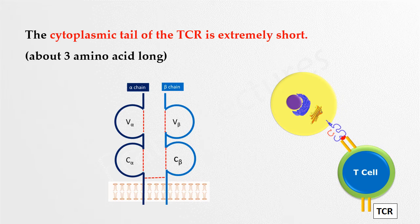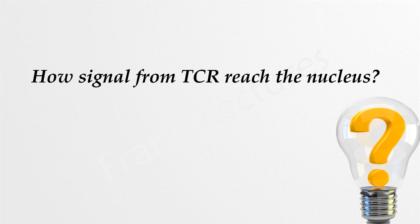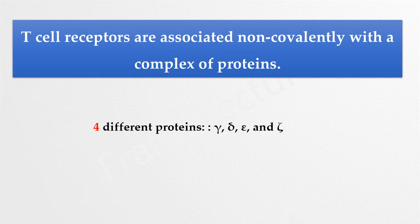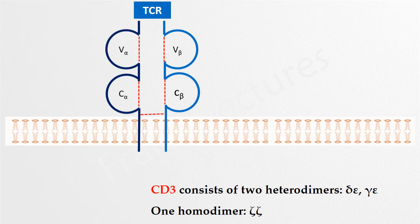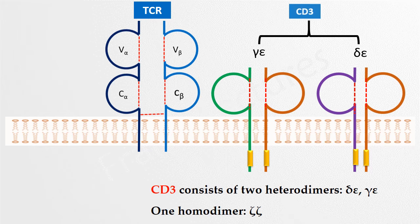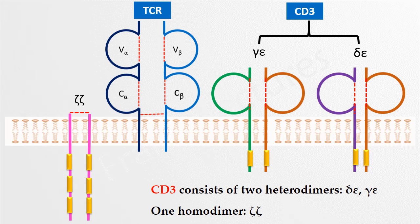So how does this signaling take place? T-cell receptors are associated non-covalently with a complex of proteins made up of four different proteins: gamma, delta, epsilon, and zeta. Two heterodimers formed by these proteins are known as CD3. The first heterodimer is formed by delta and epsilon, and the second by gamma and epsilon. Besides CD3, two zeta chains linked together by a disulfide bond form the remaining part of this protein complex.